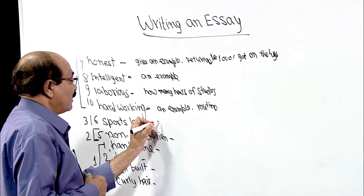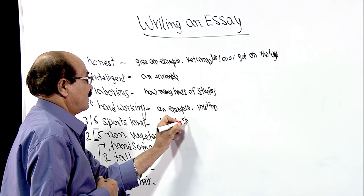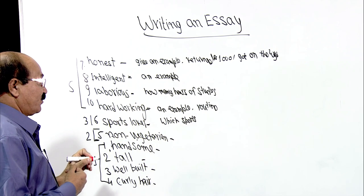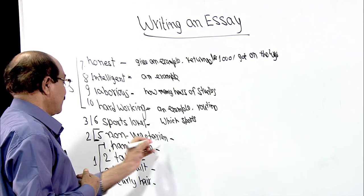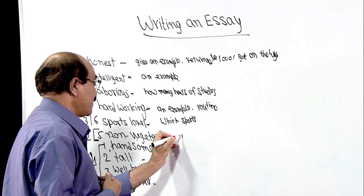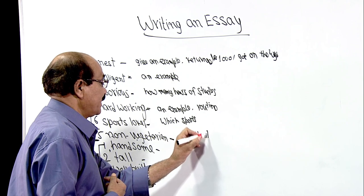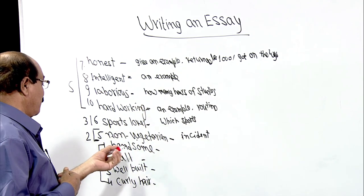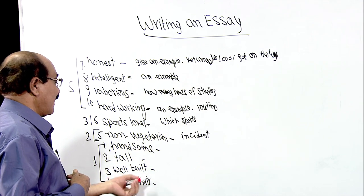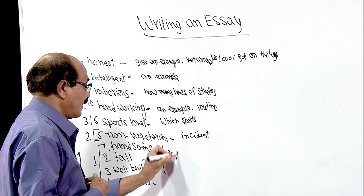Then there is 'sports lover' — which sports can be named, and what are the achievements of the friend can also be discussed. 'Non-vegetarian' — again, some incident, such as what he did when he wanted to have non-veg food. 'Handsome, tall, well-built, curly hair' — we can talk about the impact. So this is the draft.